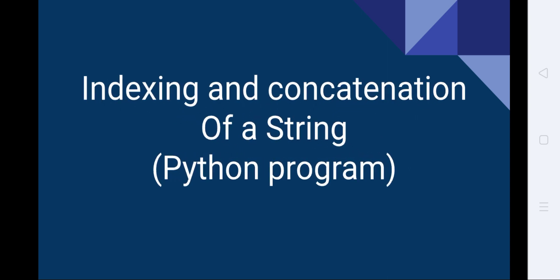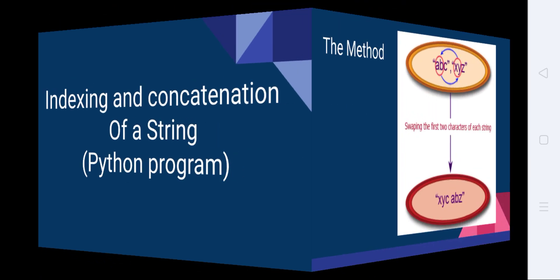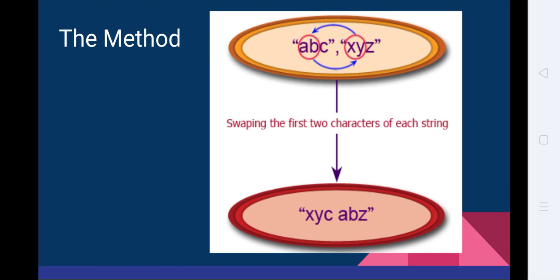Hello everyone. In this video we are going to see about concatenation and indexing in Python. A string is the collection of characters, and indexing is assigning the place value or position for a character in a string. Concatenation means the joining of two strings. Let us see a simple Python program showing how indexing and concatenation is done.